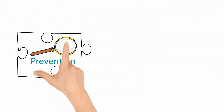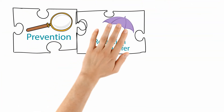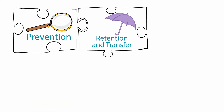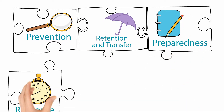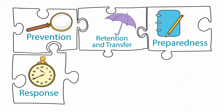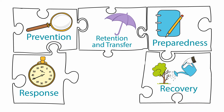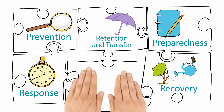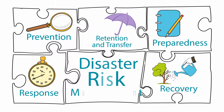One, risk prevention. Two, retention and transfer. Three, preparedness. Four, response. And five, recovery. These steps are all part of a disaster risk management approach that integrates risk transfer solutions.